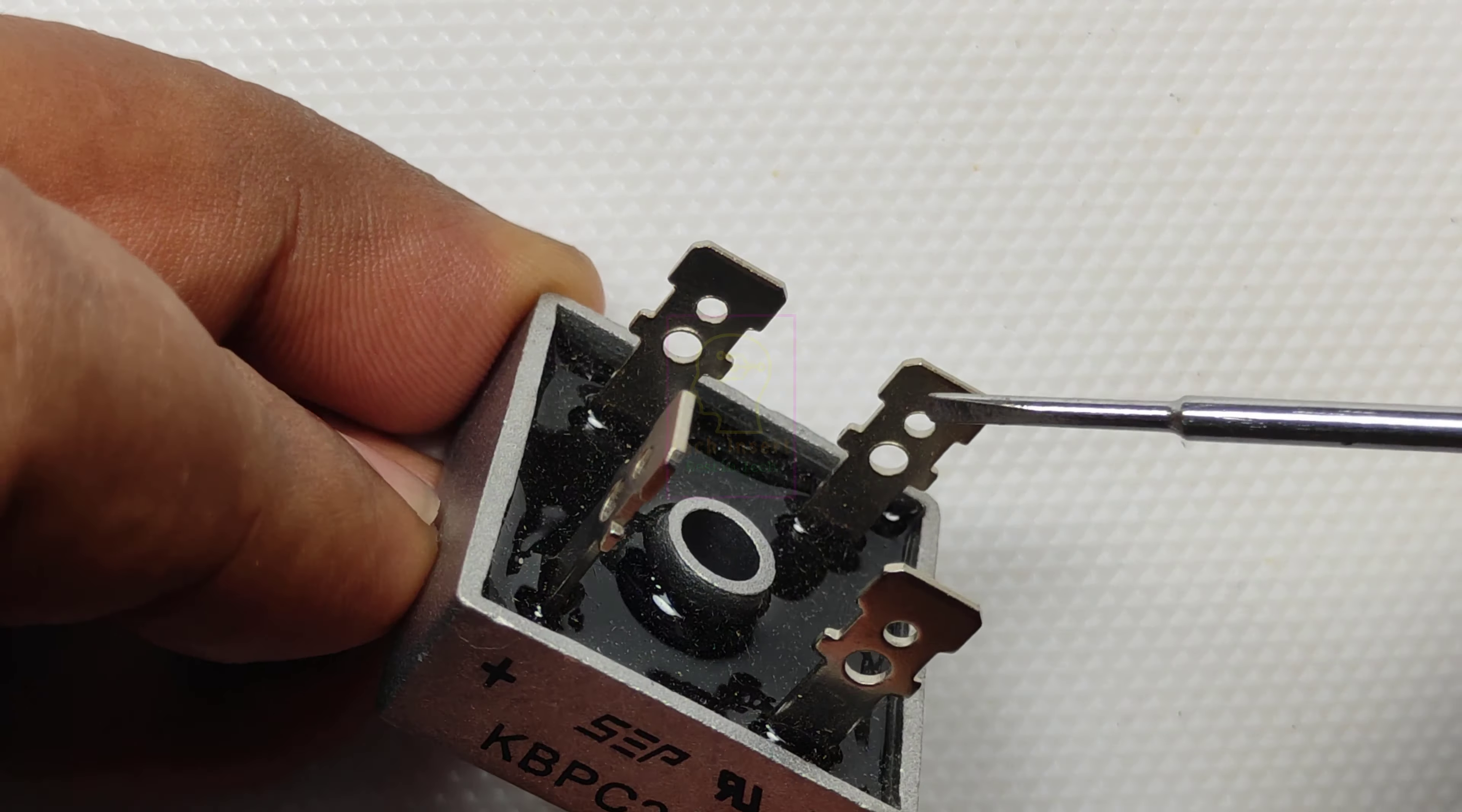The positive marked pin is the positive terminal of the bridge rectifier, and its diagonal pin is the negative terminal.